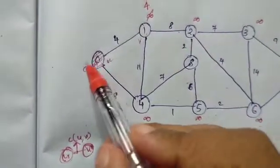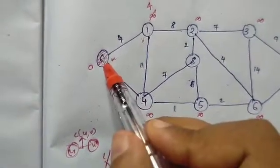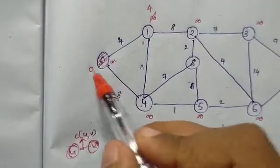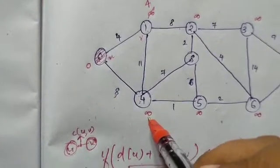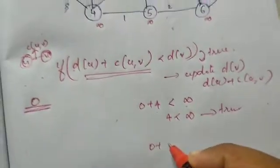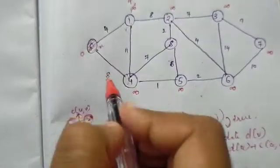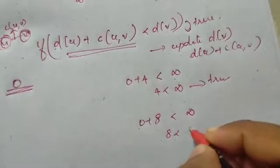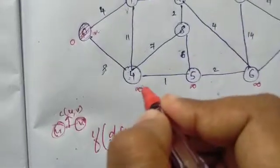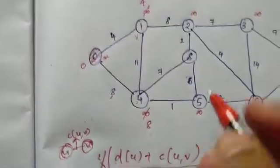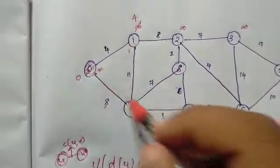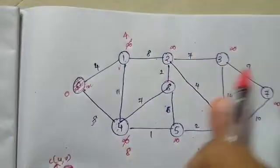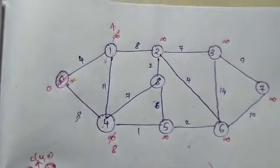Next, we calculate the next neighbor's distance. 0 plus 8: d(u) plus c(u,v) equals 8, which is less than d(v) = infinity. So 8 is less than infinity — true. We update d(v) to d(u) plus c(u,v), which is 8. So from vertex 0, the recorded distances so far are 4 and 8.